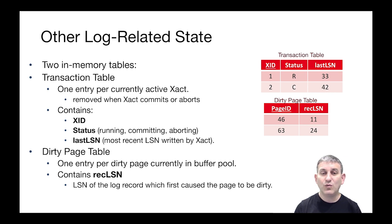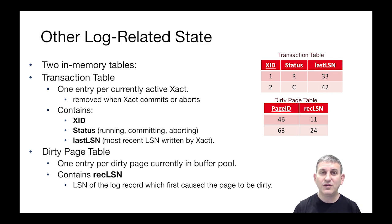The transaction table has one row per currently active transaction. Its key is XID — think of this as a hash table where the hash value is XID, the transaction ID. In addition to the transaction ID, we keep a status, which is whether the transaction is running, committing, or aborting. And a last LSN for the transaction — it's the most recent LSN written by the transaction.